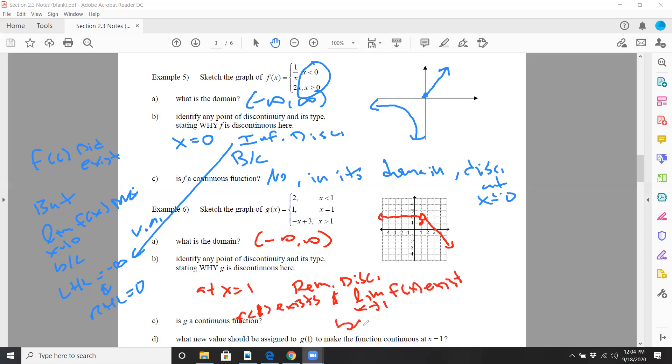But when this specific thing happens, when condition three fails, when one and two work, that's a removable discontinuity. But f of one did not equal the limit as x approaches one of f of x.